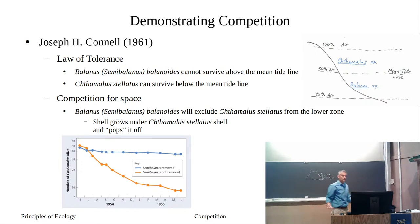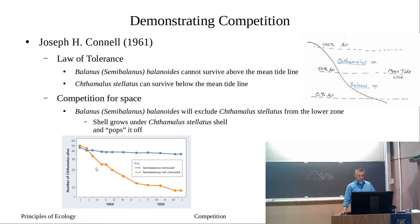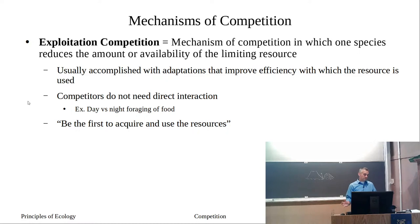That's a great example of competition — competition for space — and the better competitor is Balanus. It was able to kick off those that had colonized before it. This is an example of competitive exclusion. If you keep removing Semibalanus, Chthamalus will stay high — it can survive. But if you don't, Semibalanus gradually colonizes the rock and slowly excludes Chthamalus stellatus.